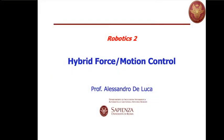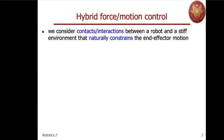Welcome to this new lecture on hybrid force motion control. We have seen that there are two conditions under which we model and control the interaction between a robot and the environment. The first involves compliance at the contact and leads to the design of impedance control. The second assumes that the environment is infinitely stiff and constrains the motion in some direction. In this lecture, for hybrid force motion control design, we will consider this second situation.